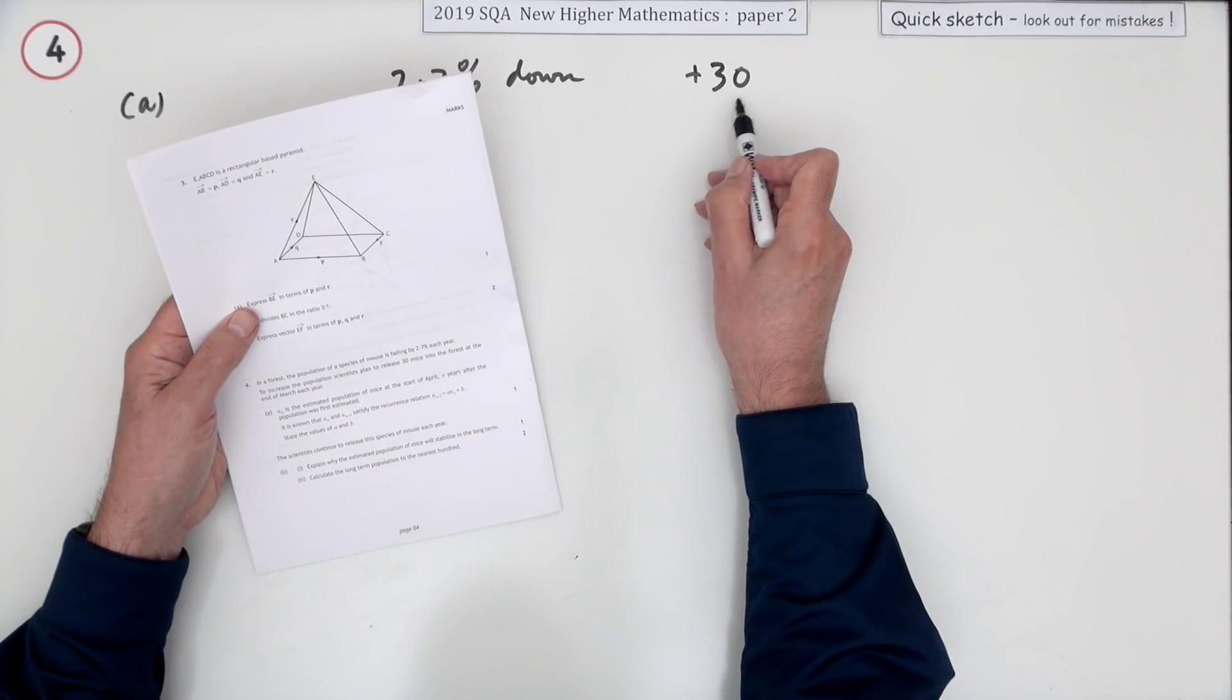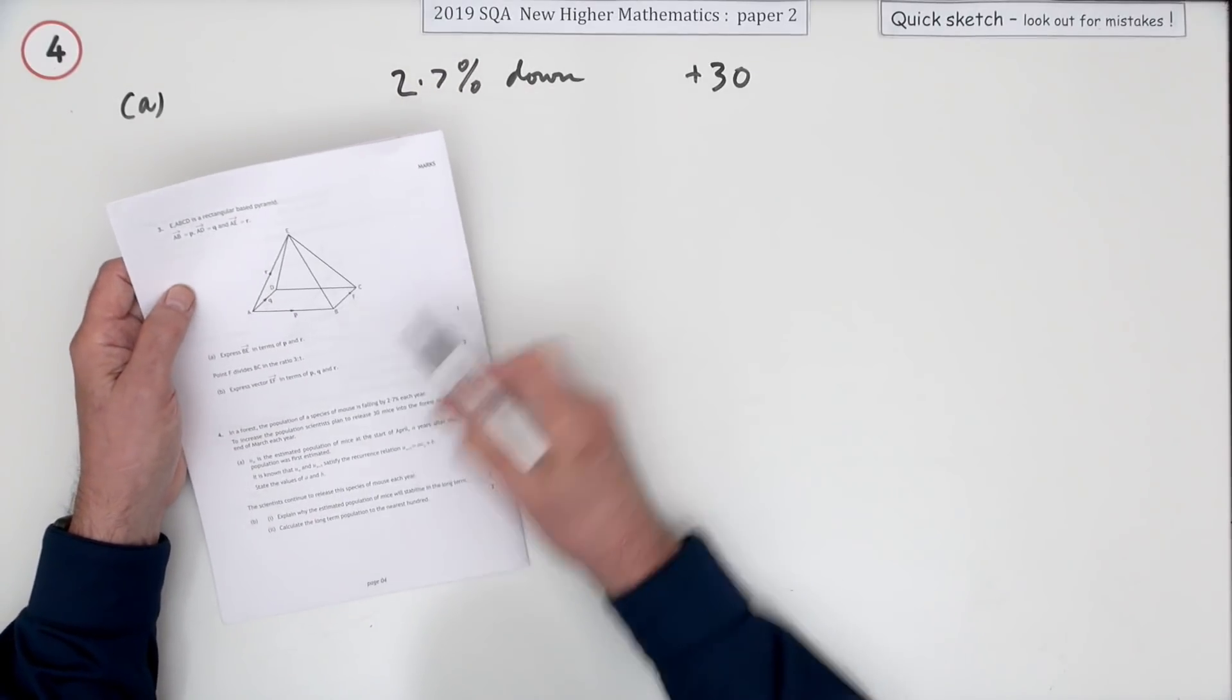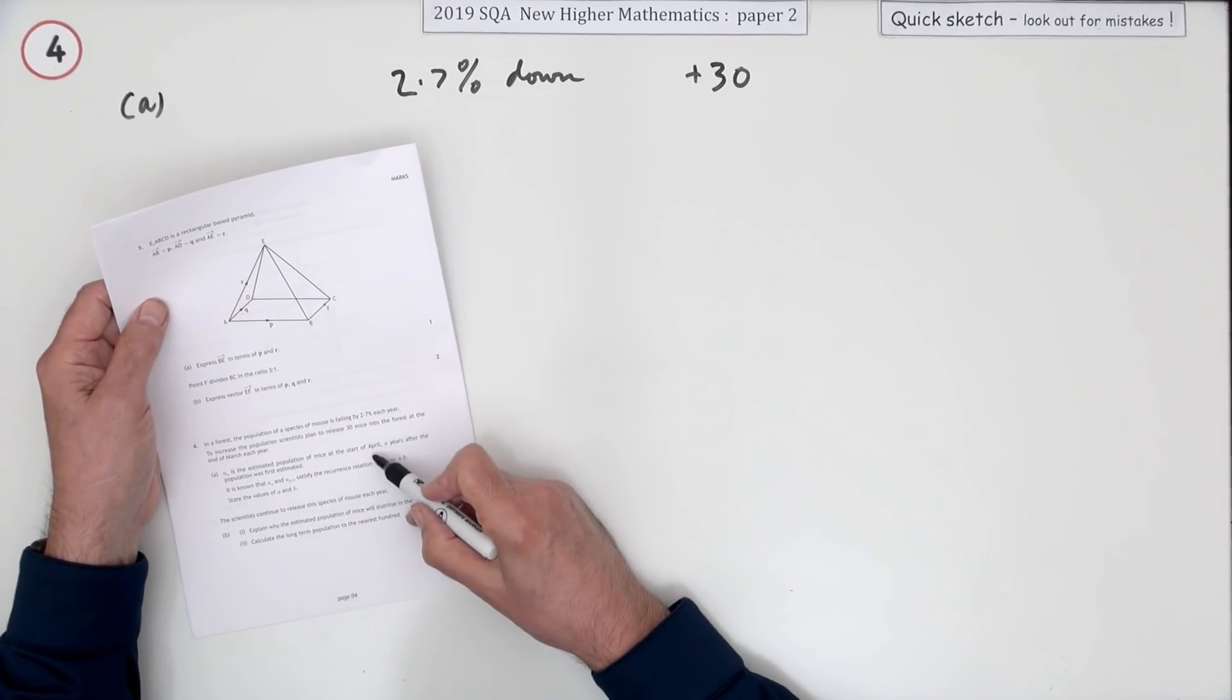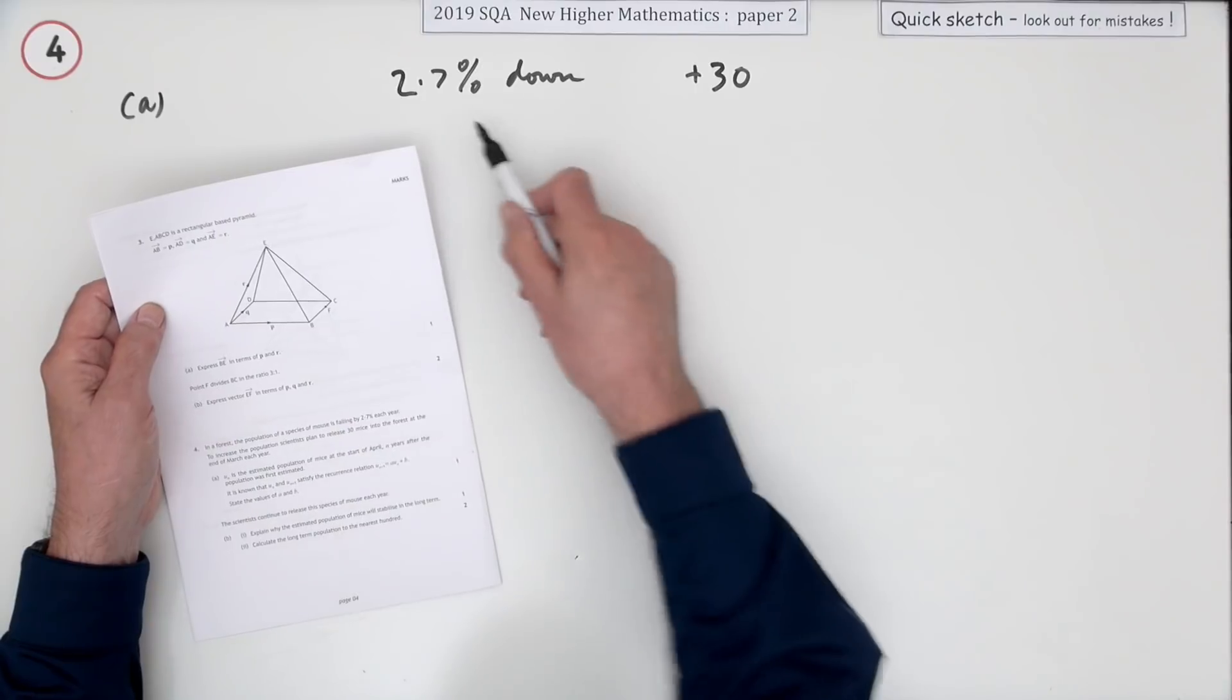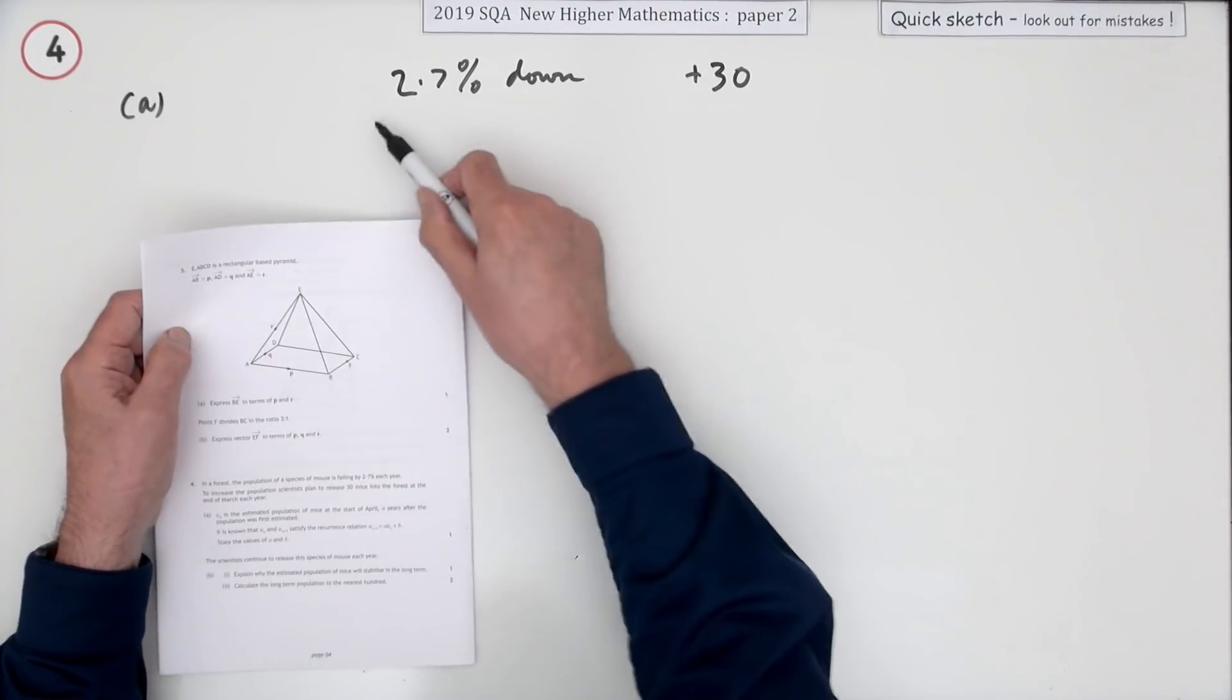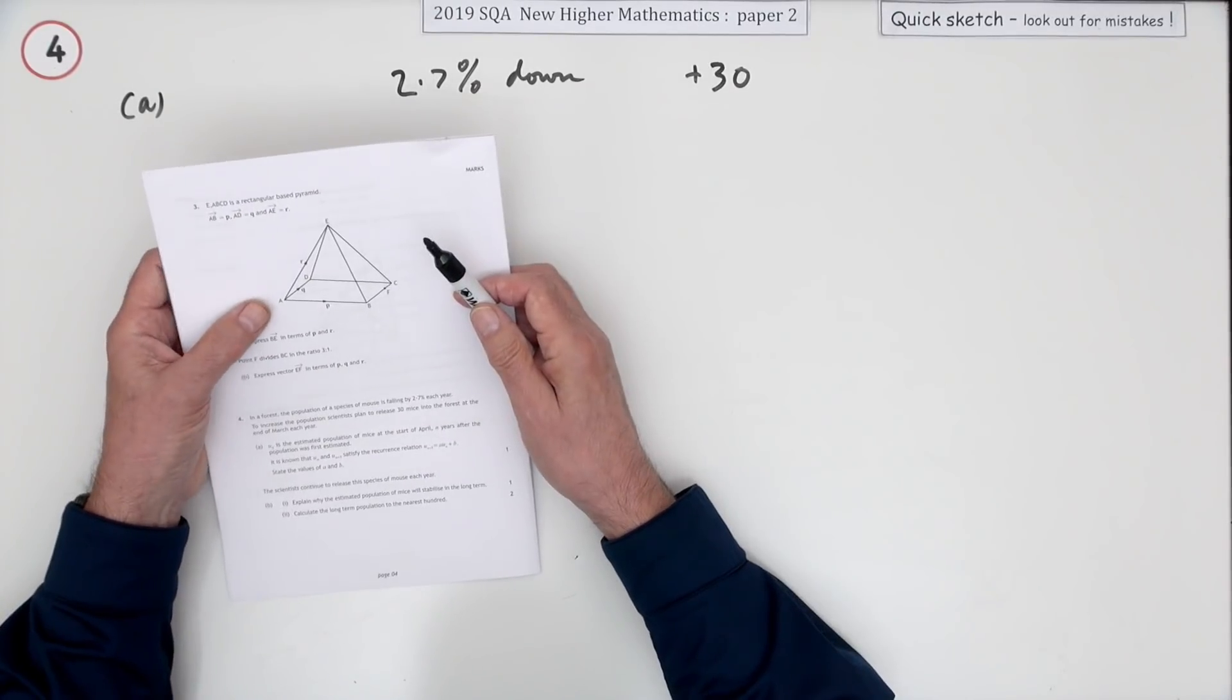UN is the estimated population at the start of April, so just immediately after they've been released. So that means once everything's been done, that's what the following number is.